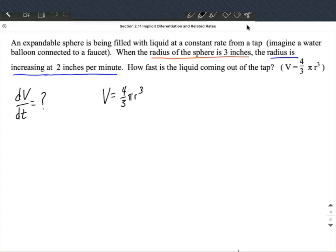So the other information that they're giving us is they told us the radius of the sphere is 3 inches, and that the radius is increasing, so the rate at which the radius is changing dr/dt with respect to time is 2 inches per minute.